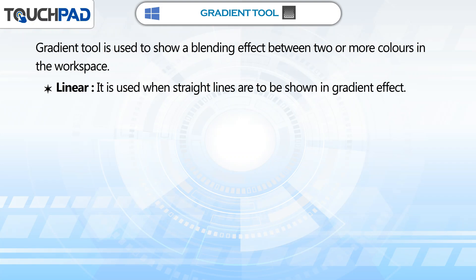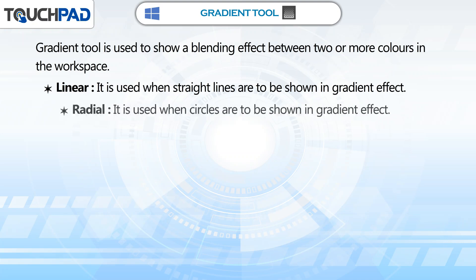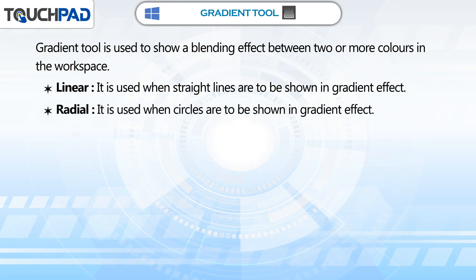Linear: It is used when straight lines are to be shown in gradient effect. Radial: It is used when circles are to be shown in gradient effect.